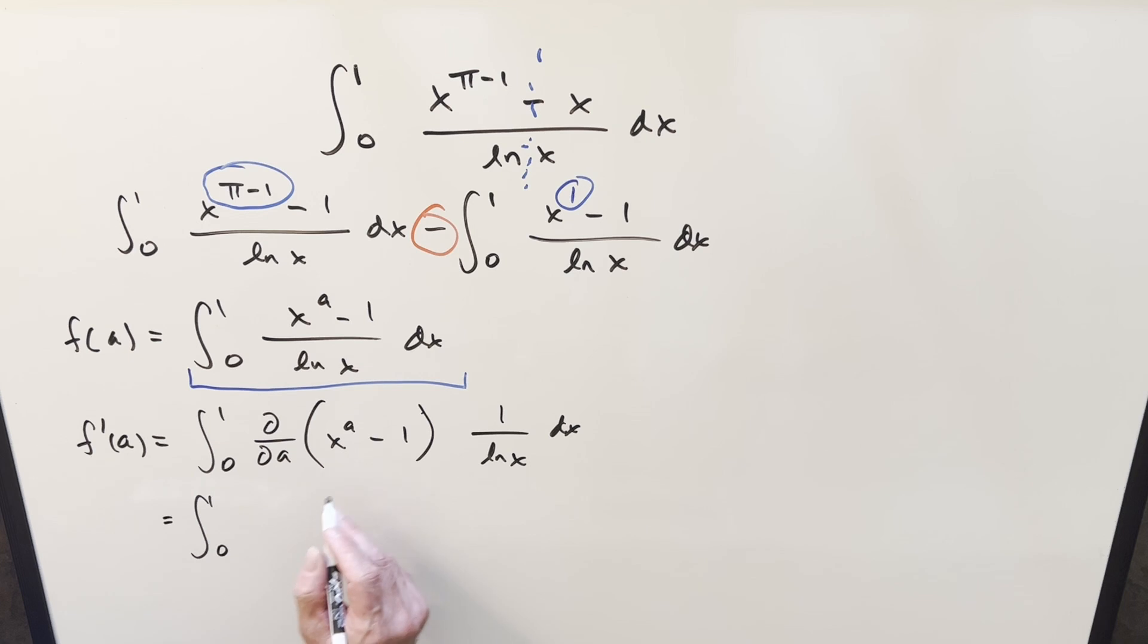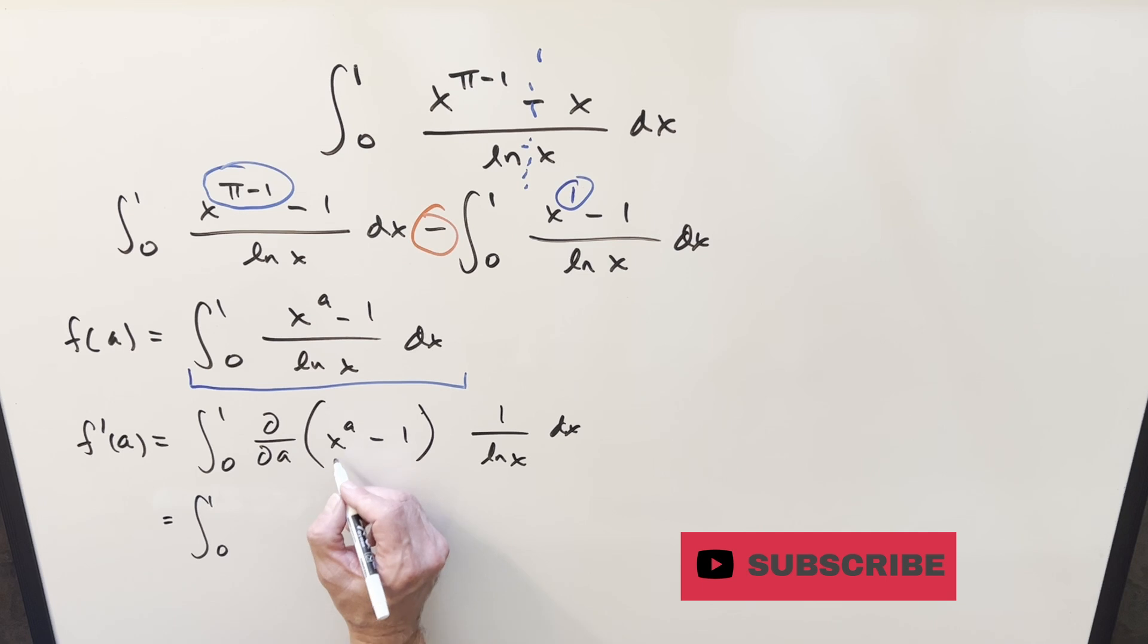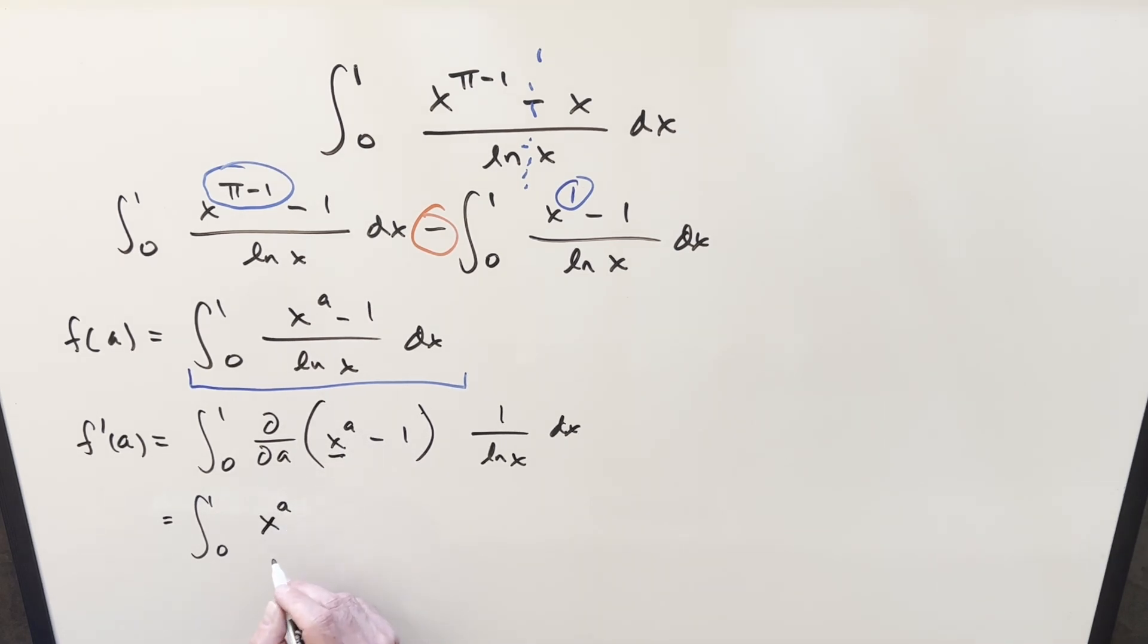Doing this, when we differentiate 1, that's just going to be 0. When we differentiate x to the a, we can use a formula. Remember, x is going to be a constant. So what we're going to get out of this is x to the a times natural log x. And then we have this 1 over natural log x here. But of course, these are going to cancel. And now we've got something simple.